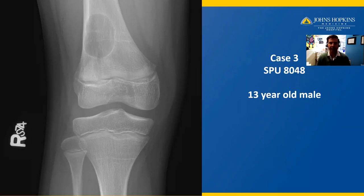Case number three is from a 13-year-old male. Here we have a lytic lesion in the distal femur metaphysis. The lesion is lytic, meaning dark or black, but it has a sclerotic — meaning a white line edge to it — which corresponds to new bone formation.